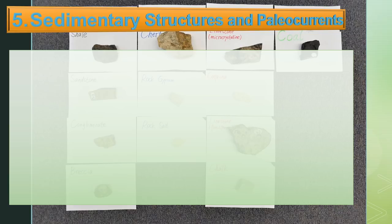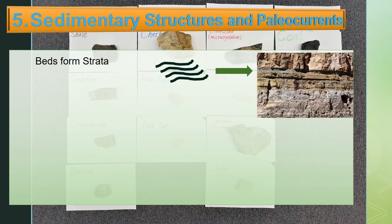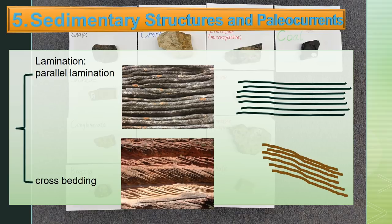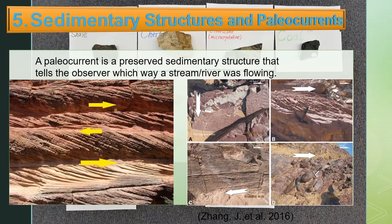Sedimentary structures and paleocurrents. Sediment is deposited in layers called beds, which together compose strata. There are two types of lamination: parallel lamination and cross bedding. A paleocurrent is a preserved sedimentary structure that tells the observer which way a stream or river was flowing. The arrows in the figure show the direction of flow.